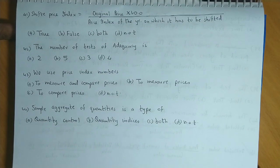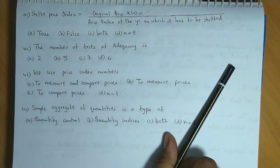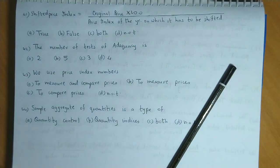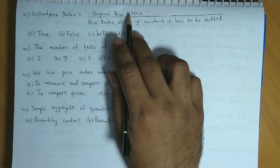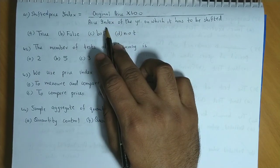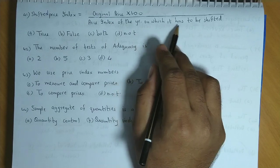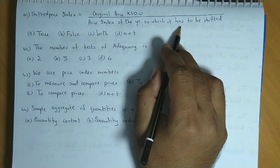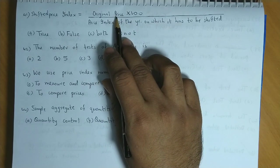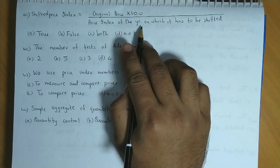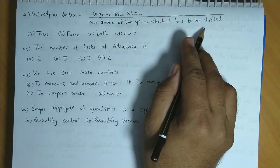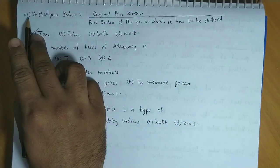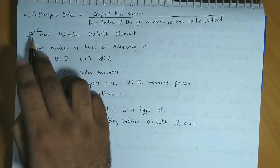Question number 41: The shifted price index. Yehan parahega D. The shifted price index is equal to the original price in 200 upon price index of the year on which it has to be shifted. Yes this is the correct formula for shifted price index. The original price index upon the price index of the year on which it has to be shifted into 100. So is ka answer hai true, 41 the answer is true, option A.